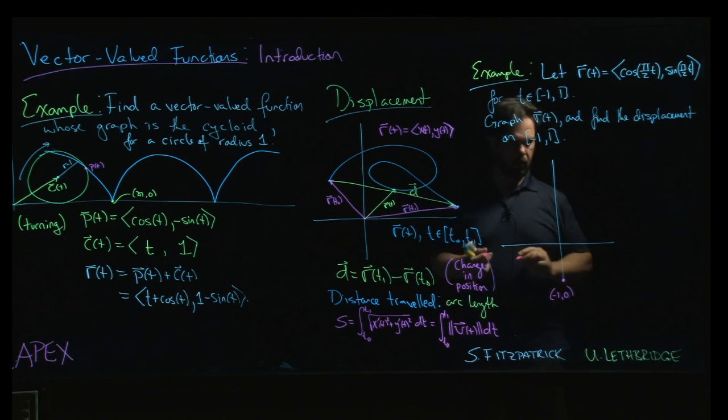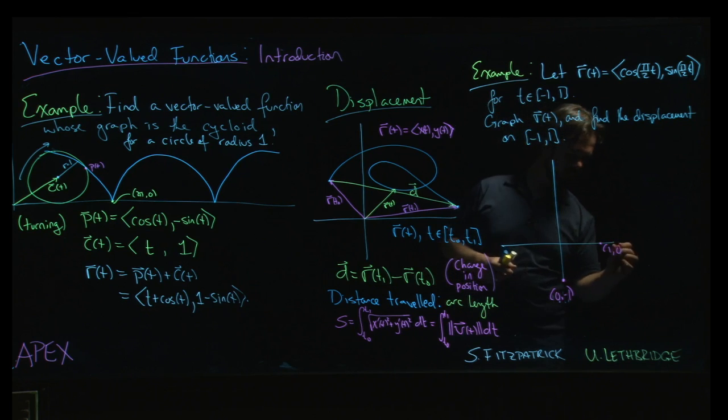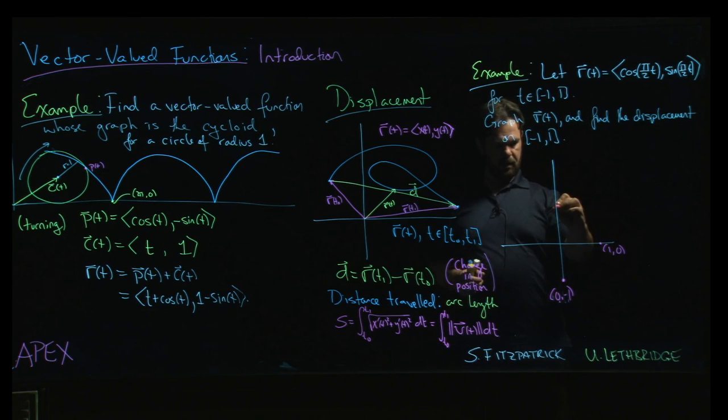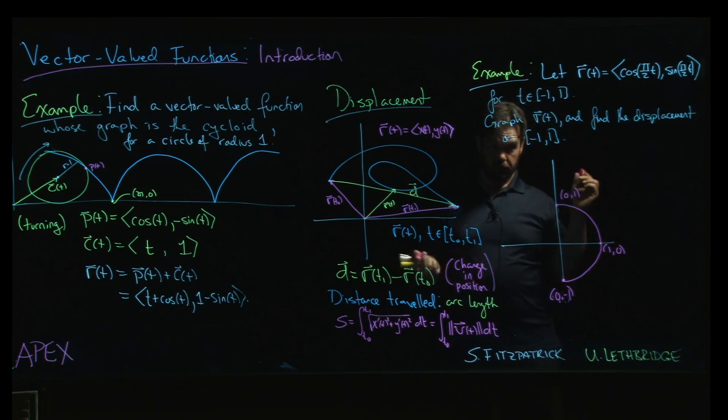We start at minus 1, 0, right. And t is going to increase as we pass through zero, we're going to go through—I'm sorry, let me get my coordinates right, a classic mistake there. x is 0, y is minus 1, coming up through (1, 0) and ending when t is equal to 1 at (0, 1). So there's our curve.